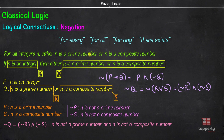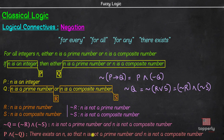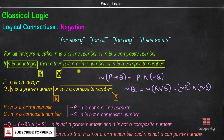Therefore, the negation of this statement becomes: n is an integer, and n is not a prime number and n is not a composite number. Please note that in general, when we negate a statement having 'for all,' 'for any,' or 'for every,' these phrases get replaced with 'there exists.' Now, let me give you a little exercise. We have reworded our original sentence in if-then form here. Can you try to negate this reworded sentence? Let me know your answers in the comments.